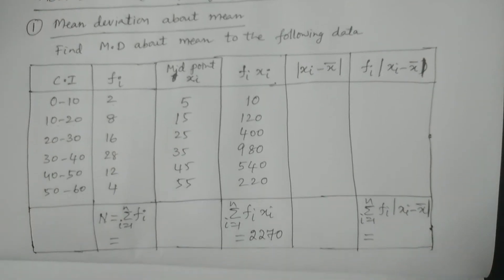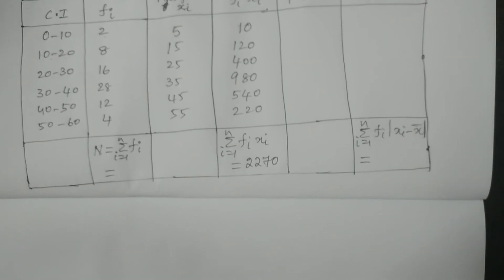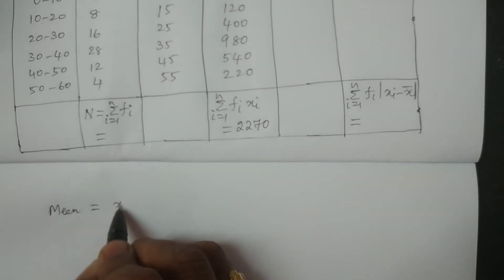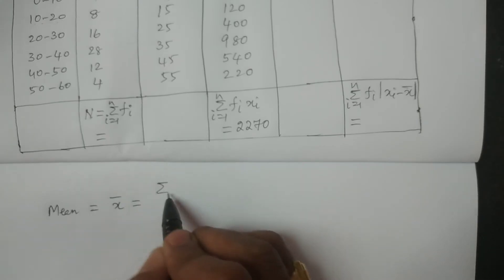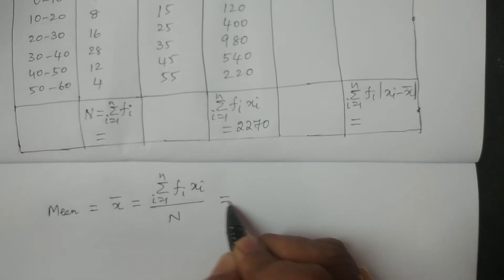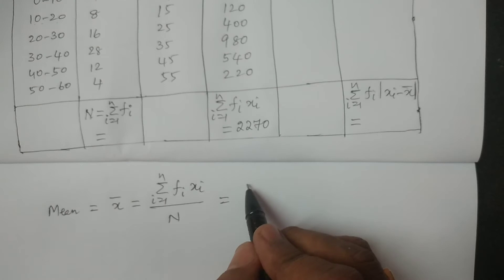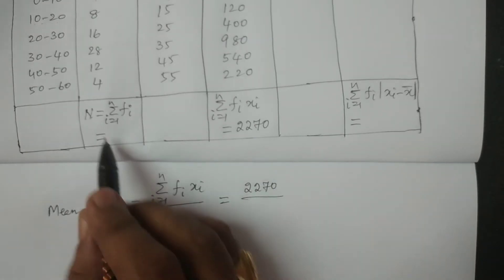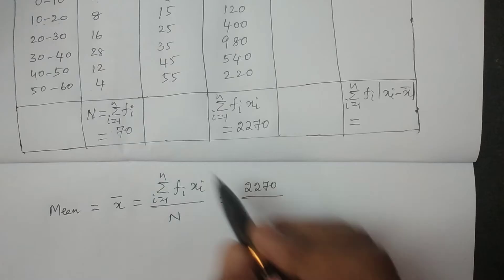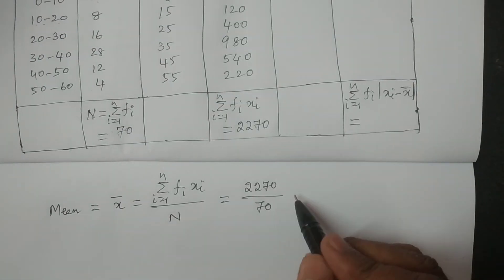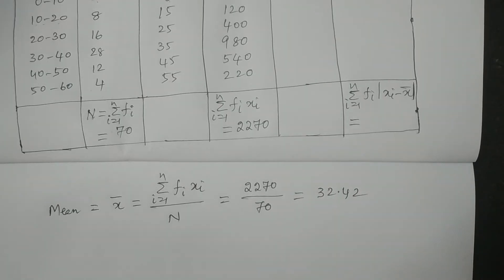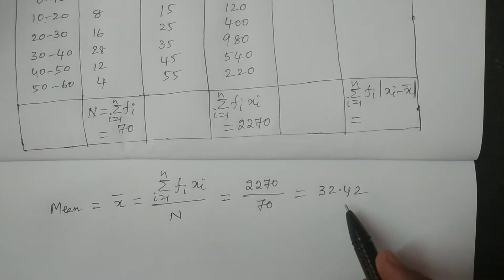Now calculate the mean. The formula is: X̄ = summation of Fi·Xi divided by N. Summation of Fi·Xi is 2270 divided by N, where N equals 70 (the total of all frequencies). Therefore, X̄ = 32.42.